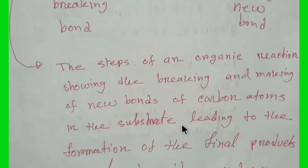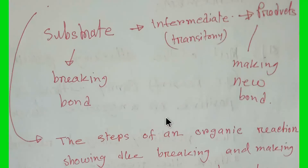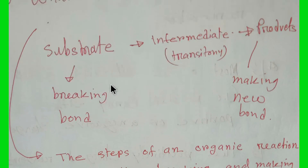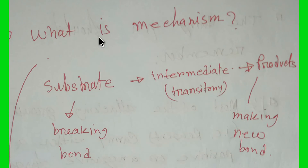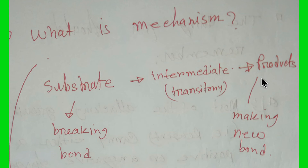These steps lead to the formation of the final product through a transitory intermediate. These steps are called the mechanism. So mechanism is the breaking and making of new bonds through a transitory intermediate.